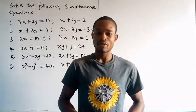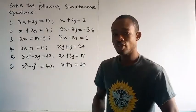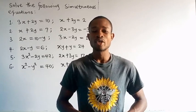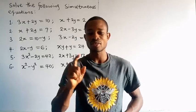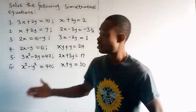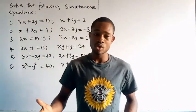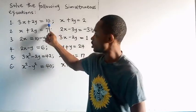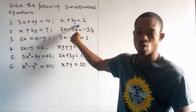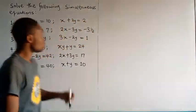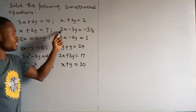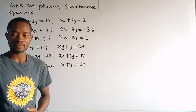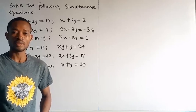Let us get to the business of our class today. We have six questions on the board. How do we identify simultaneous equations? A simultaneous equation simply contains two or more equations. In our case, we have a pair of equations — two equations — forming each question. You could have up to three or four equations with unknowns in them; that kind of equation is called a simultaneous equation.